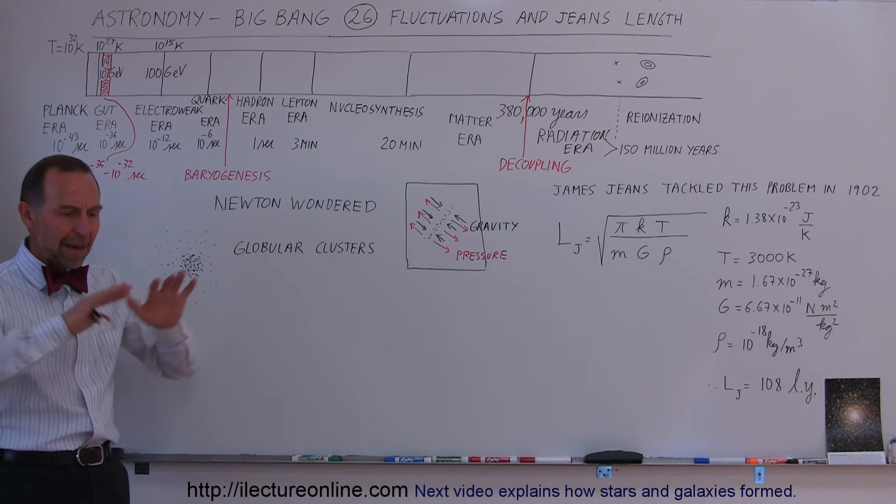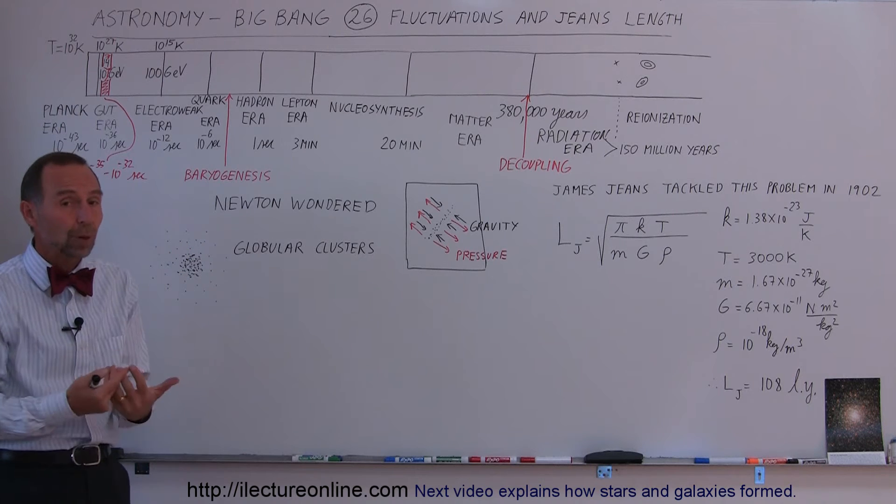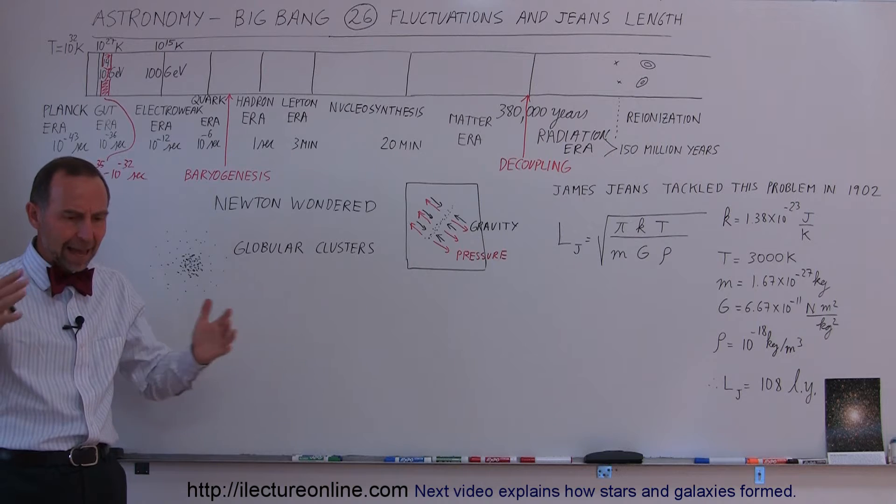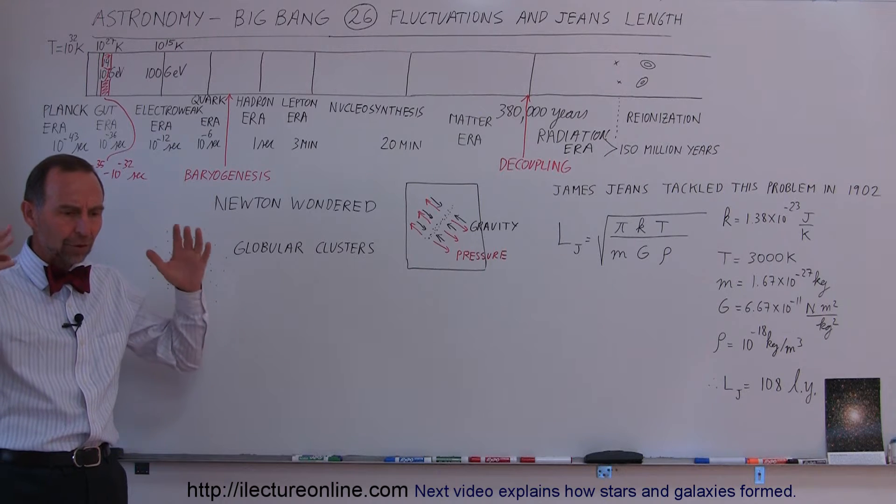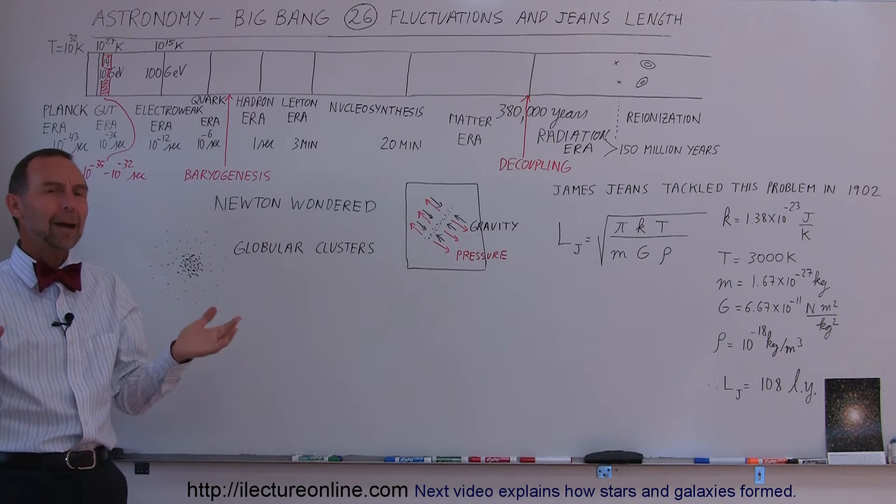But we had matter all throughout the universe, fairly dense because the universe was still fairly small in relation to what it is today. And so here we have these atoms that now under gravity's force would begin to coalesce into stars. But how did that really happen?